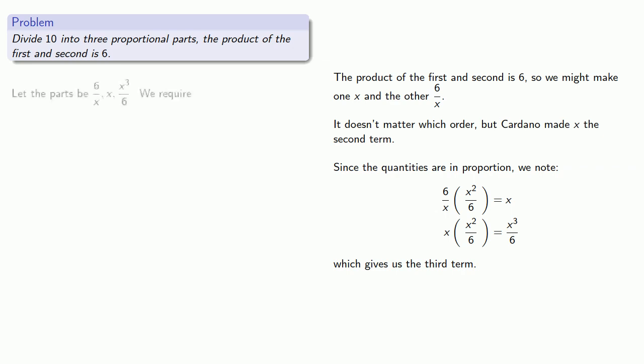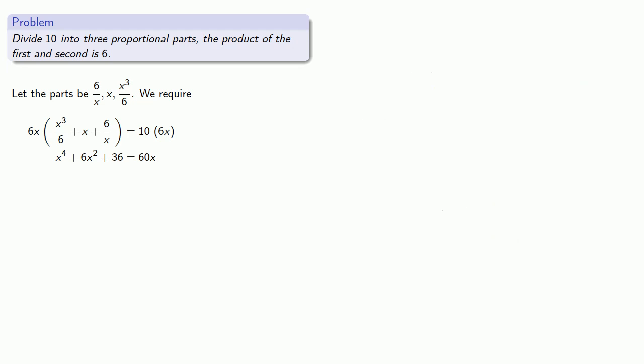Let the parts be 6 over x, x, and x cubed over 6. We require that these three add to 10. If we multiply through by 6x, we'll be able to eliminate the fractions and get the equation.